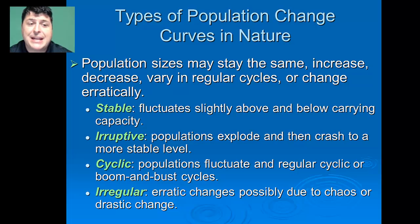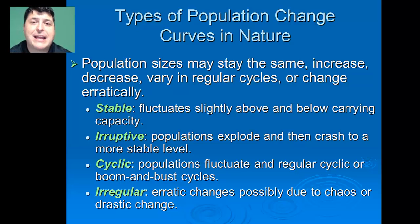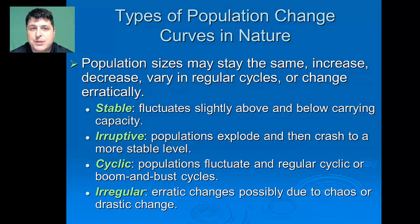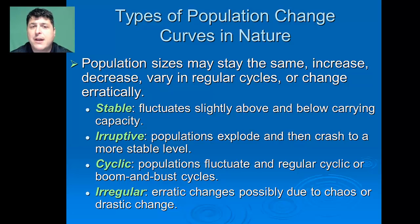Depending upon the environment, population sizes may change — they could stay the same, have great increases or decreases, be more cyclical, or have very erratic changes. Stable populations fluctuate slightly above and below their carrying capacity, and we see a lot of stable populations in stable environments like tropical rainforests. Eruptive populations have explosions of population followed by diebacks — many insect species exhibit this, for example cicadas with their eruptive life cycle.